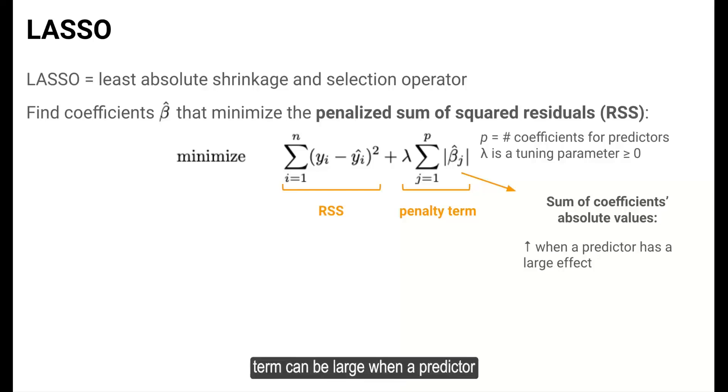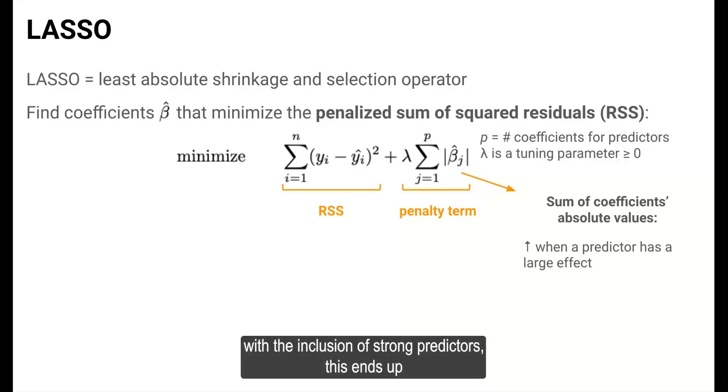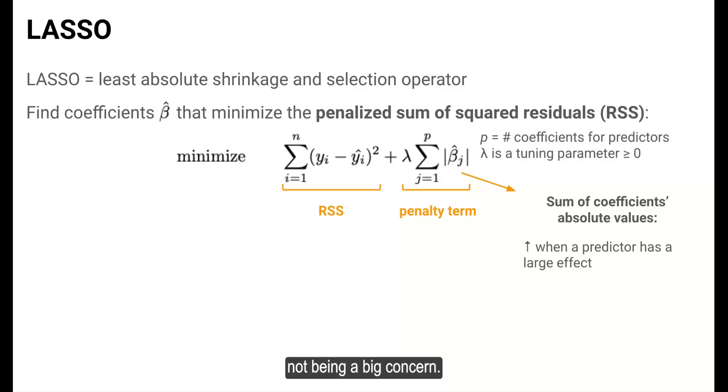The penalty term can be large when a predictor has a large effect on the response—that is, when a coefficient is large in magnitude, a strong predictor. Although it may seem undesirable and potentially even counterproductive to have increases in the penalty with the inclusion of strong predictors, this ends up not being a big concern.